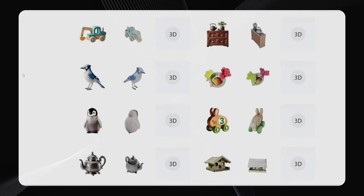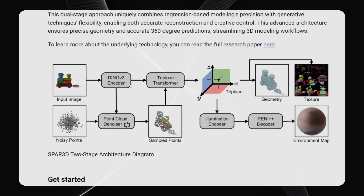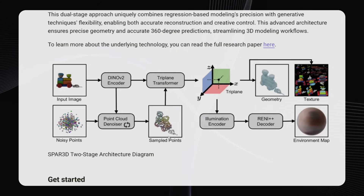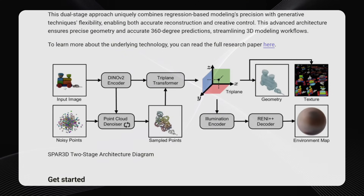Here's how it works under the hood. The architecture has two main stages. In the first stage, your input image is decoded and fed into a specialized point diffusion model, which creates a point cloud that captures the object's fundamental structure — kind of like a blueprint. In the second stage, a triplane transformer processes this point cloud data, along with the original image, to generate the 3D data. This includes all the intricate details like geometry, texture, and illumination.